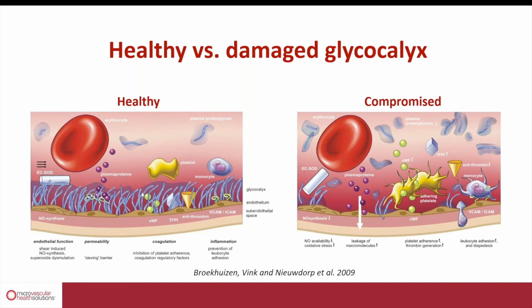The size of the glycocalyx — up to a few microns — not only prevents red cells from touching the endothelium, but also prevents other circulating cells like platelets and leukocytes from sticking to the small adhesion molecules, which are only nanometers long and produced on the membrane of the endothelium.